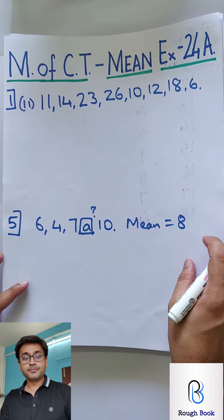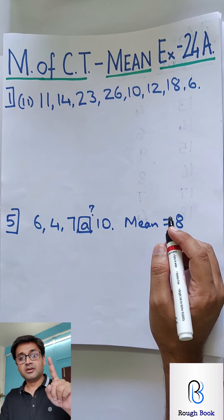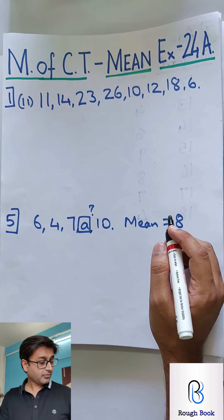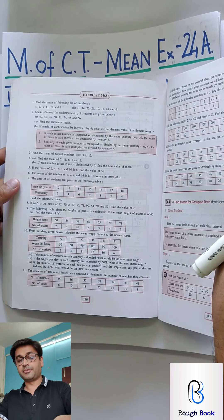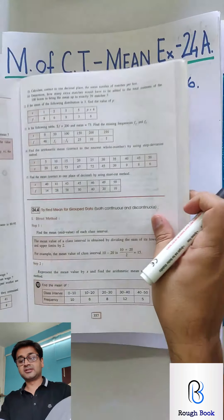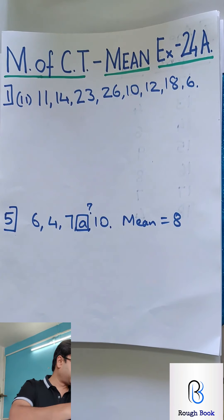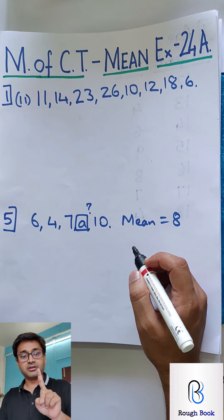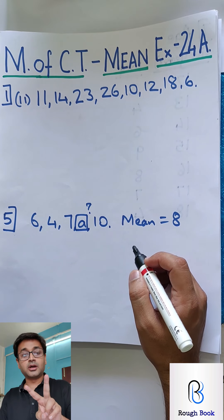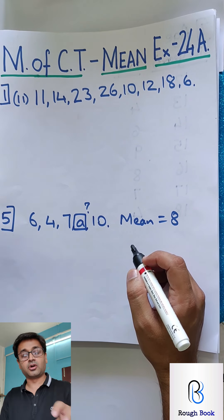Before we go ahead, data can be presented in three methods. We are going to use exercise 24A — I am just showing you the pages in case you want to take a screenshot. This is 24A part, first page, and this is the second page. In the entire exercise, you will see only two types of data: the first one is raw data, and the second is ungrouped distribution table. The grouped one is in the next exercise, so right now we will work on these two.